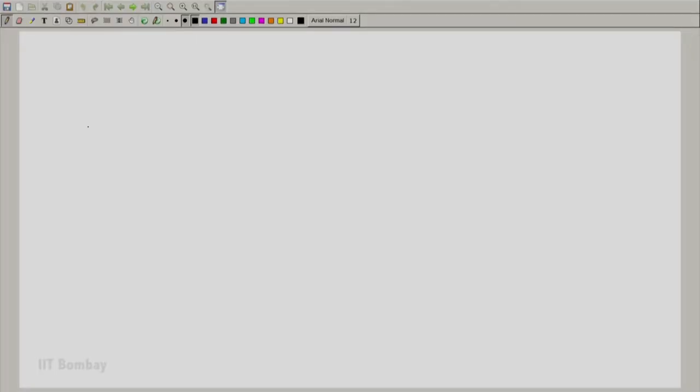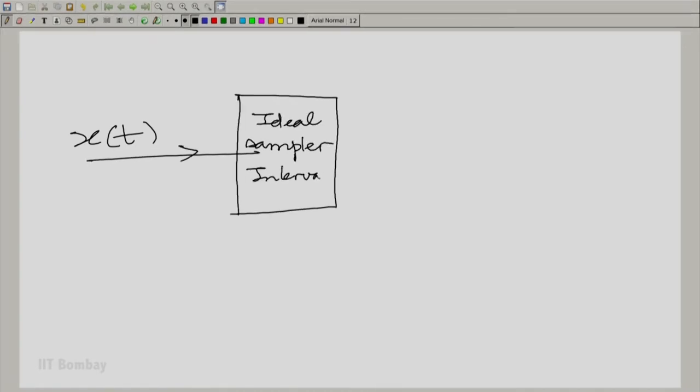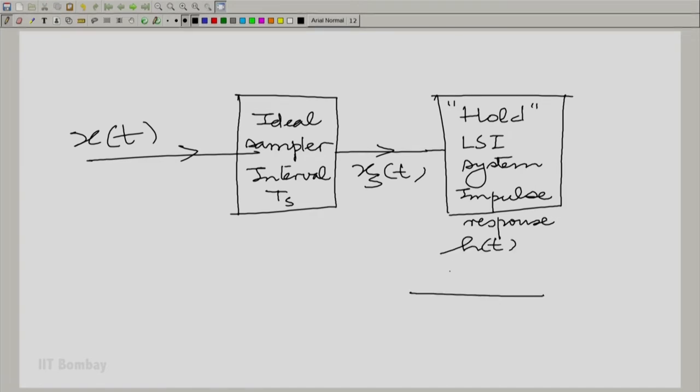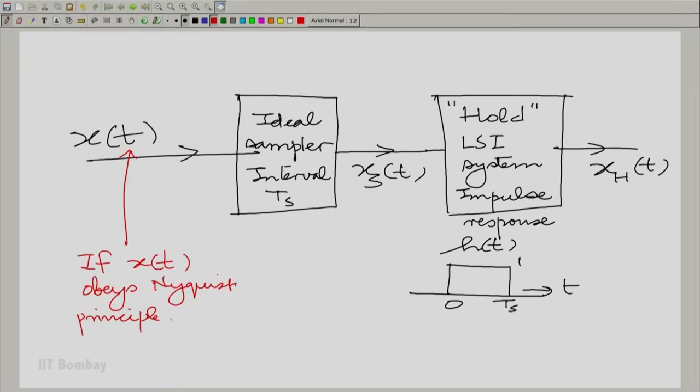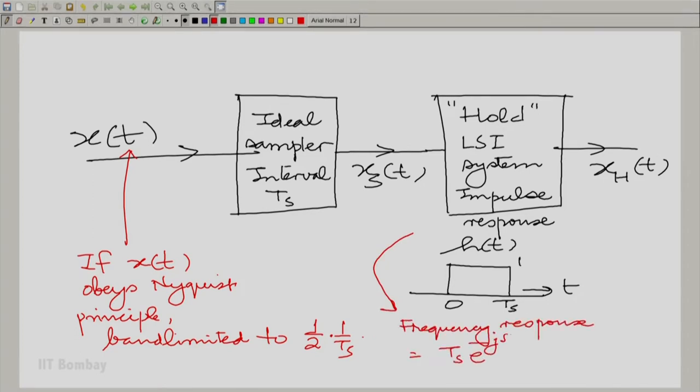Let us put all that we did together first. Let us look at the signal x(t) that we gave the ideal sampler which produced an output x_s(t) and the hold which produced x_h(t), the so-called held waveform. Now, let us consider x(t) to have obeyed the Nyquist principle. If it obeys the Nyquist principle, it is band limited. There can be no frequency component more than half of the sampling frequency which is 1 by T_s. And we also know the frequency response of this, we have calculated it.